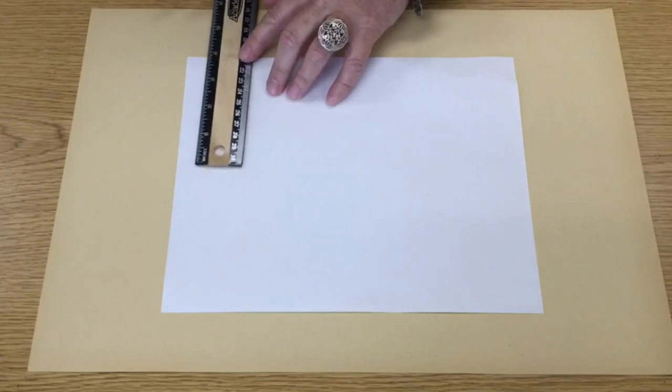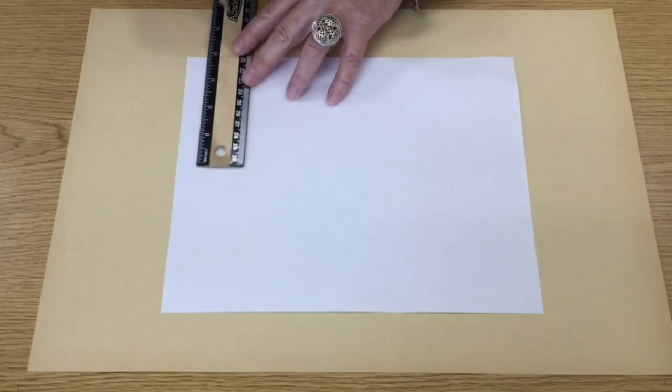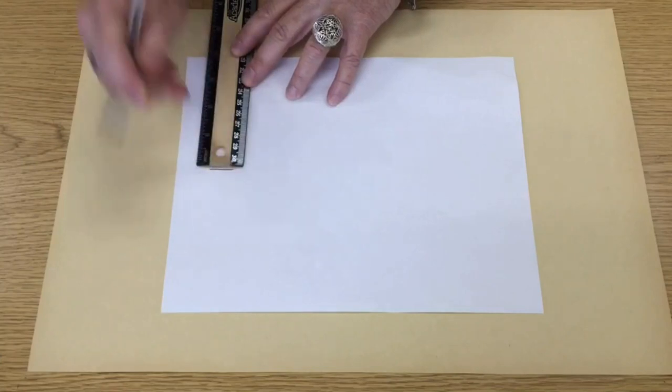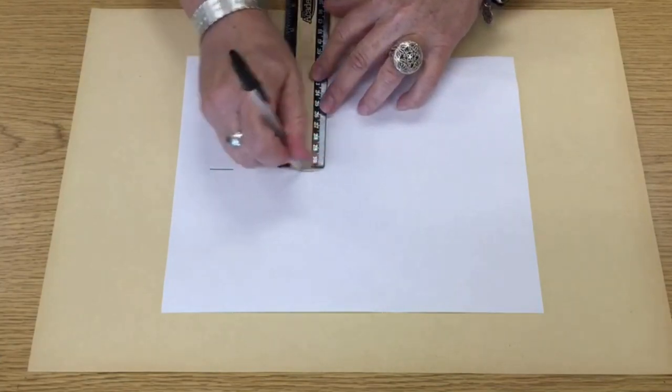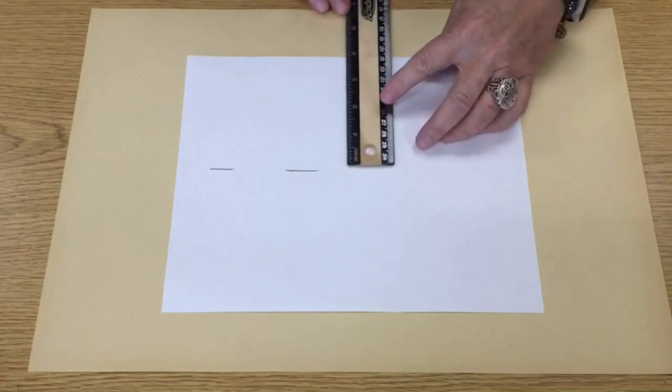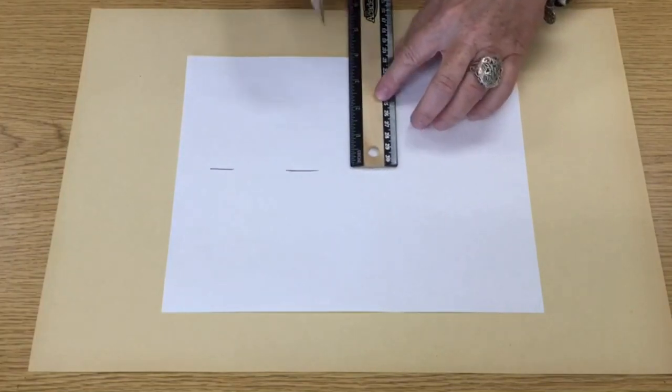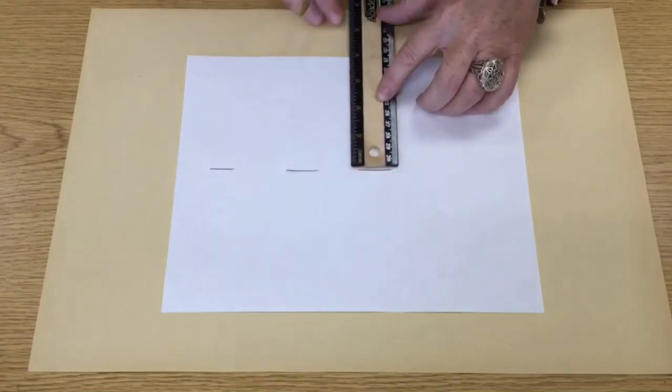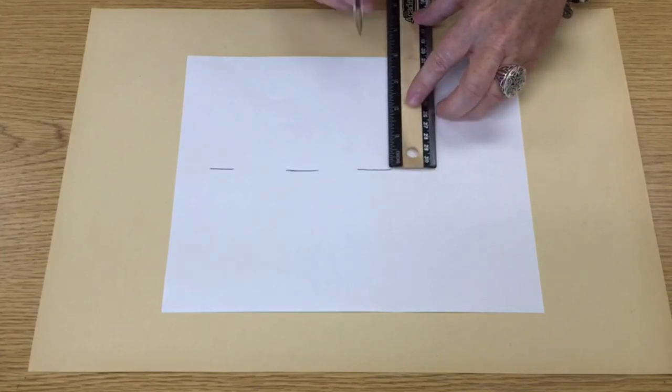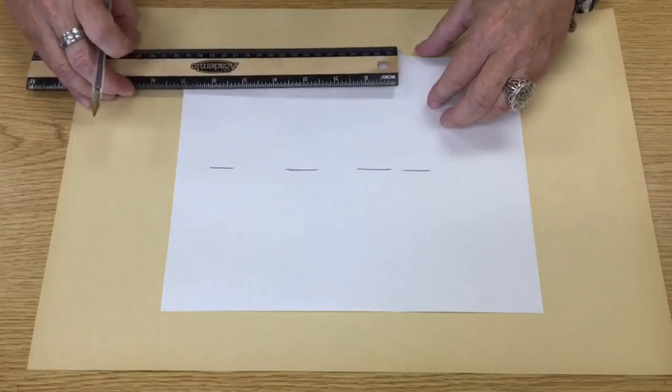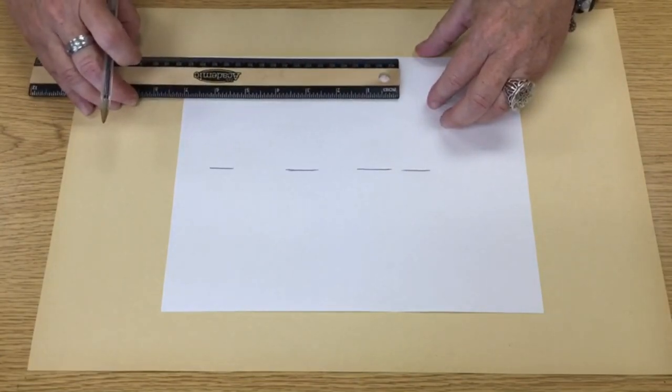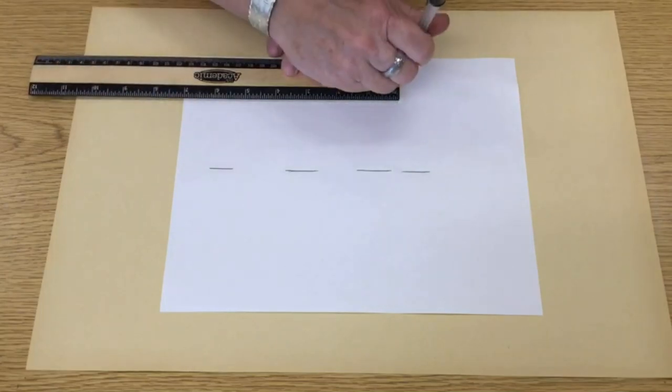We're going to take this ruler and we're going to set it up four inches and we're going to mark because our pillow is four inches wide. And we're just going to keep moving it down, making sure it's straight and making our little marks. And then we're going to measure and do the same way thing the other direction for seven inches because the pillow needs to be seven inches long.